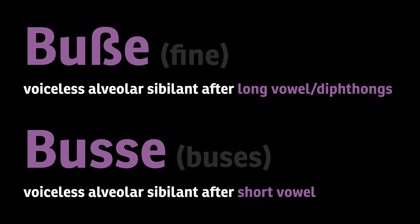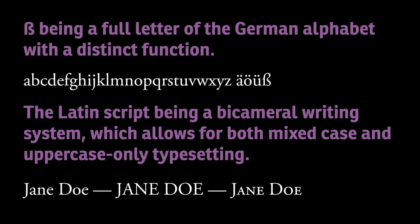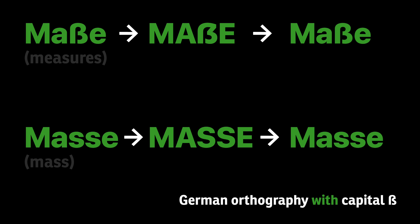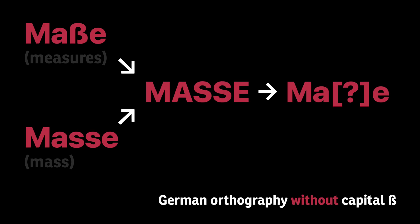It should now be clear why there is a need for a capital sharp S today. It logically follows from just two points: the sharp S being a full letter of the German alphabet with a distinct function, and the Latin script being a bicameral writing system which allows for both mixed case and uppercase-only typesetting. Every letter that can be required for mixed case typesetting must also exist for uppercase-only typesetting, or we run into all sorts of problems — like having different spelling rules depending on the case, or not being able to match words or clearly identify proper names. Representing one character with two other characters can never be a sufficient solution, since it becomes unclear whether those two characters stand for themselves or for that one original character.